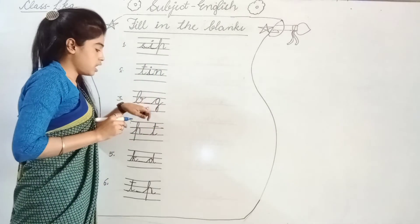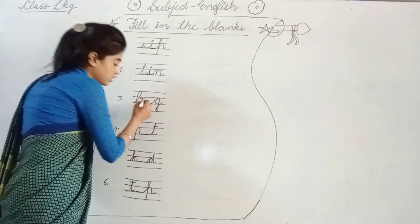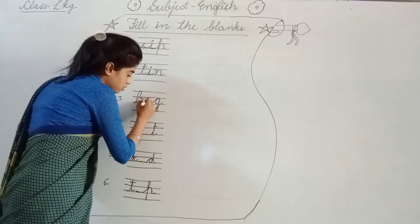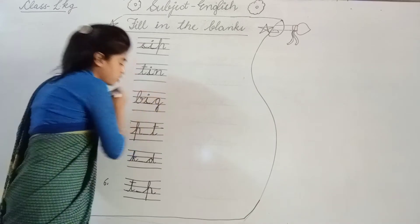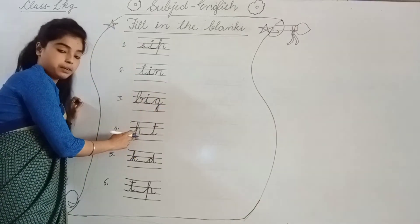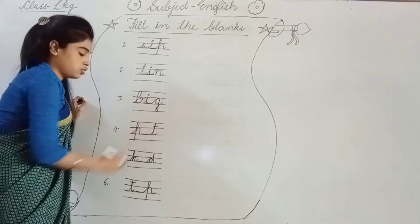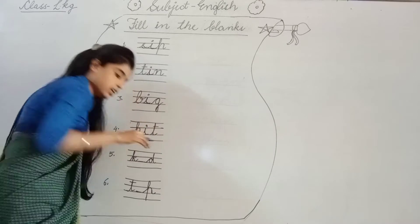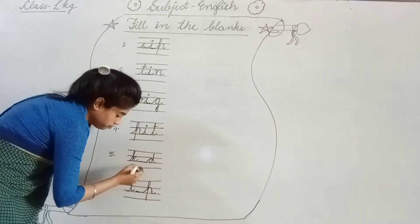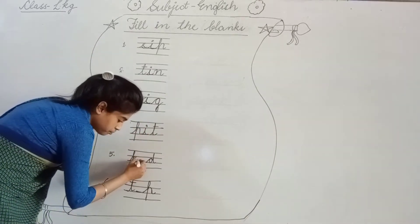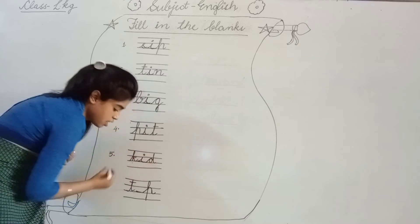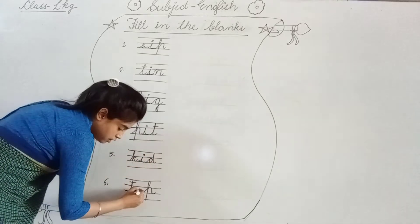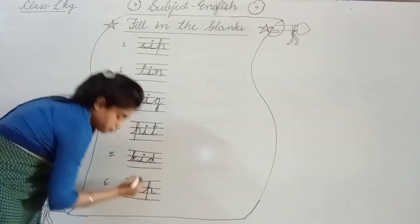And next we get P-G. So what do we have to write? P-I-G, PIG. So next we have P-T, PIT. K-I-T, KIT. D-I-P, DIP.